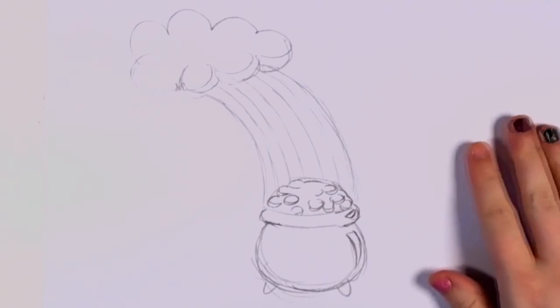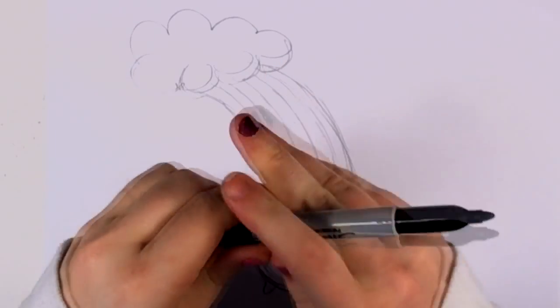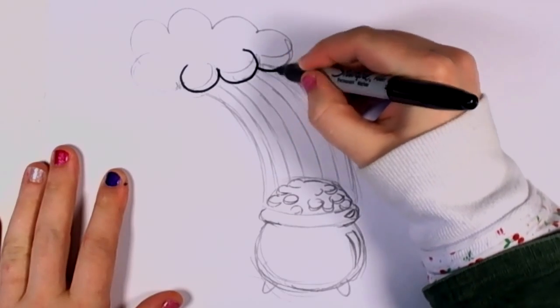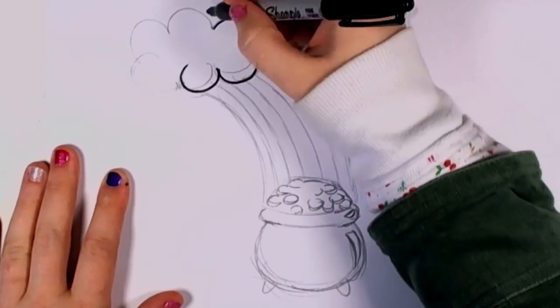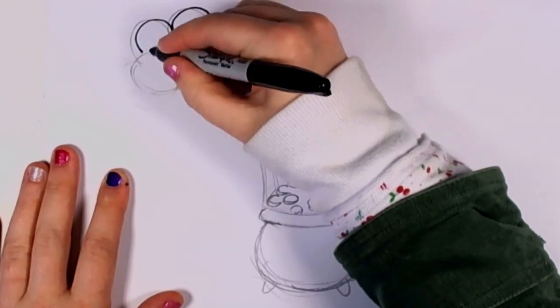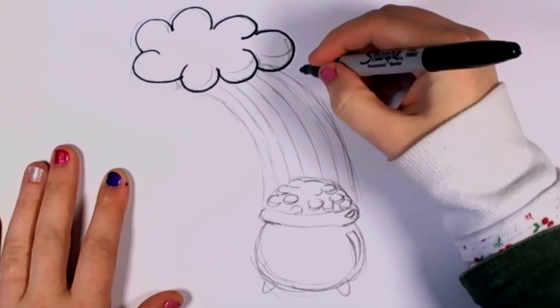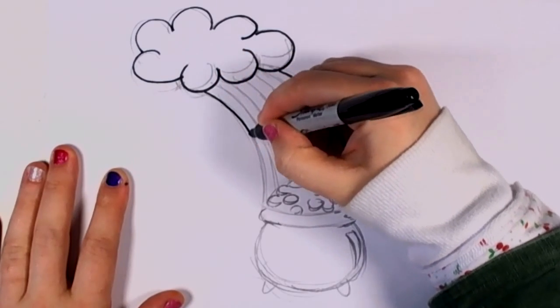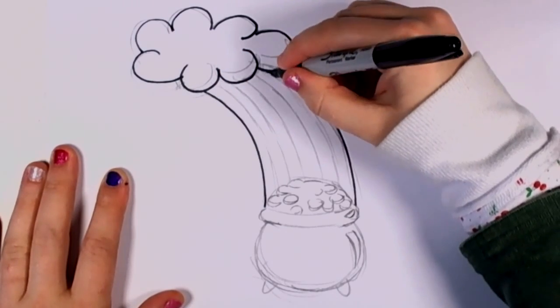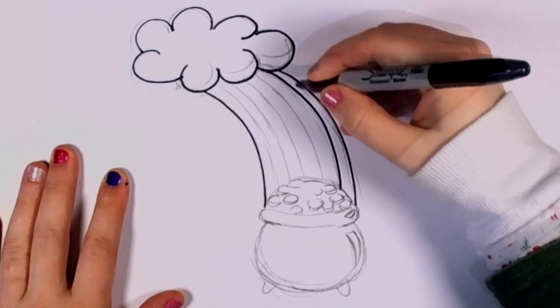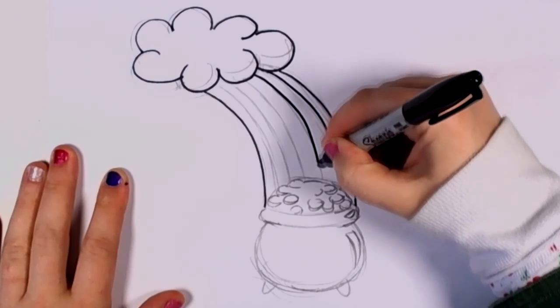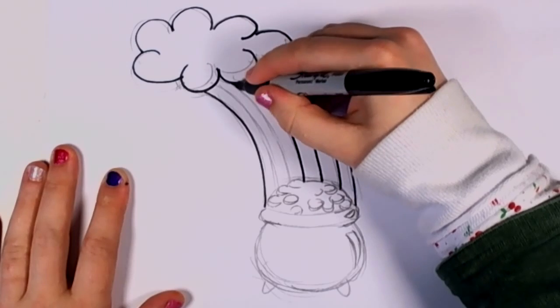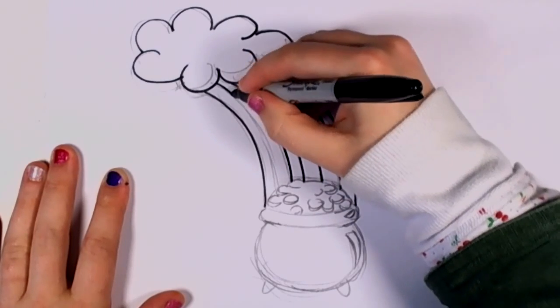So now I'm going to outline everything in Sharpie marker. And then very carefully, I'm going to outline the rainbow. And I want to be careful because if I move too suddenly or shake the Sharpie marker, then the rainbow will not look smooth. And if you ever looked at a rainbow before or seen a picture of it, they're really smooth arcs. And I want to maintain that smoothness.